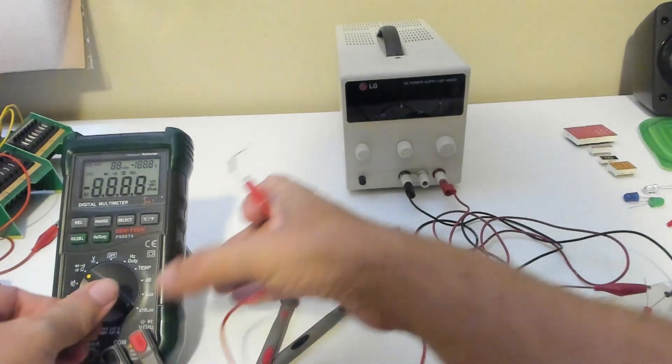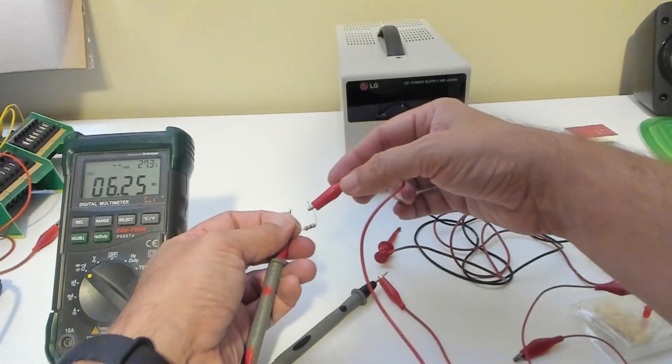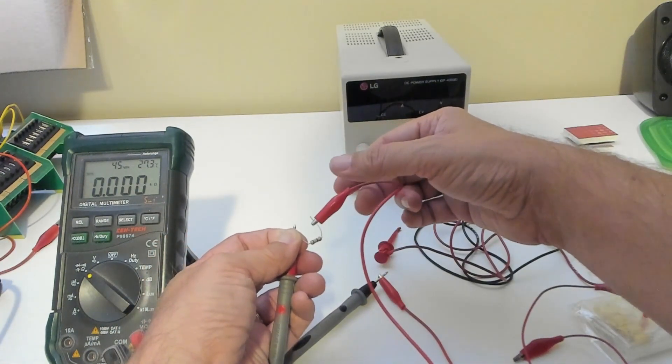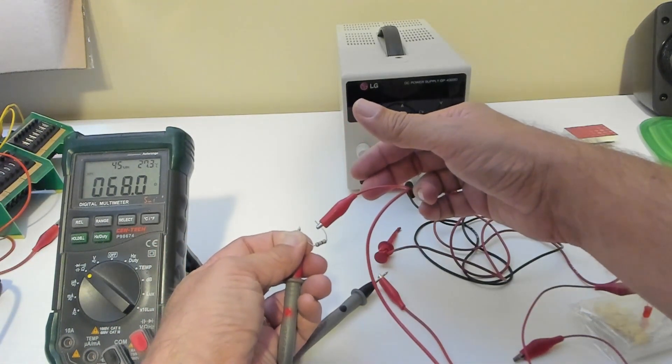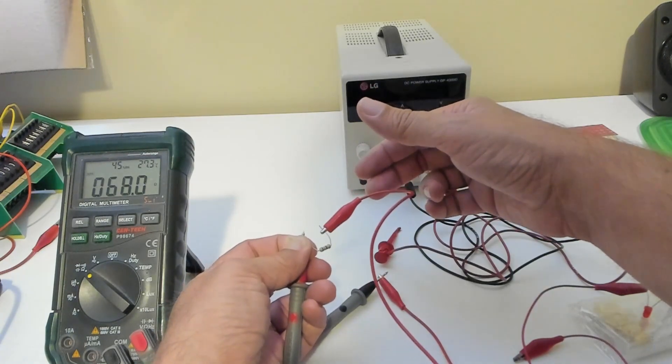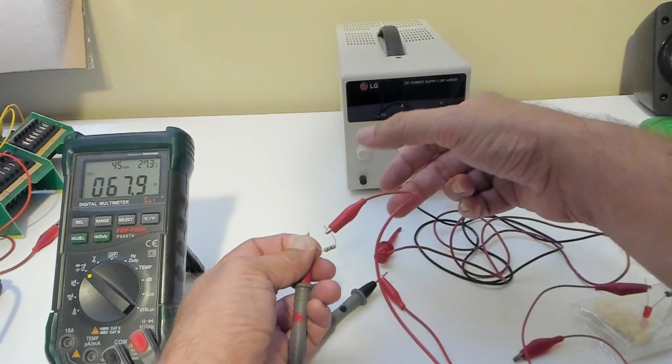So first we're going to measure how many ohms our resistor is. Because it's a low number of ohms, it's okay if you're holding it. Typically if it's high ohms like mega ohms, you shouldn't hold it because your body also has resistance.